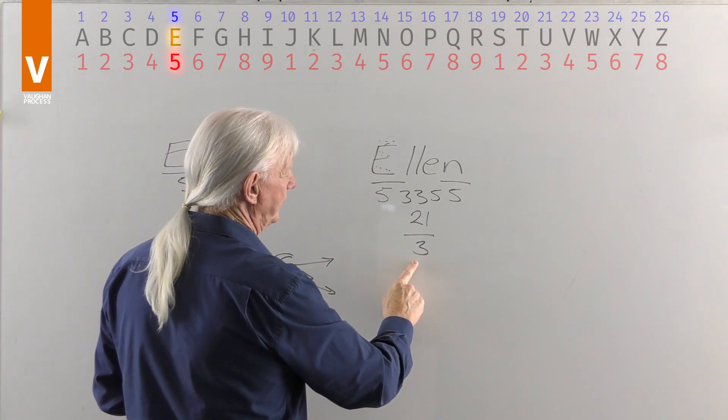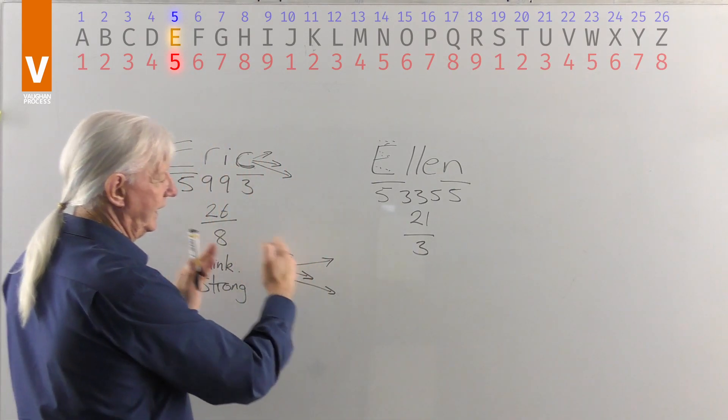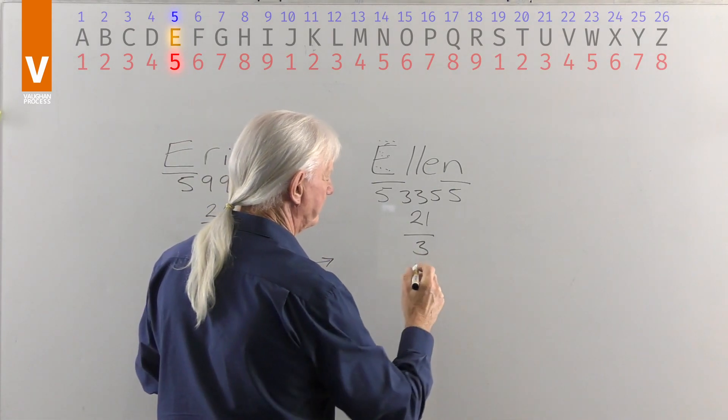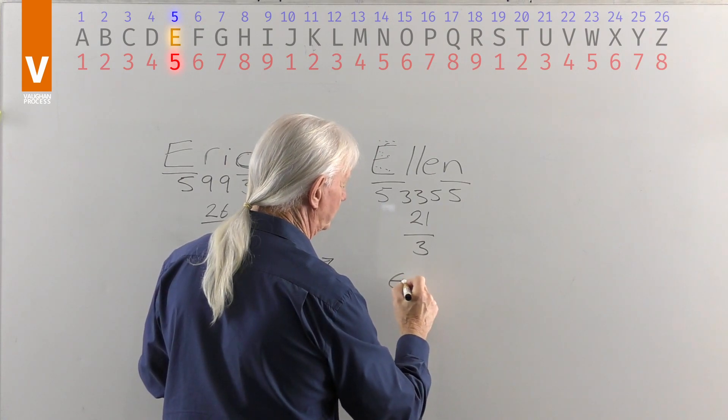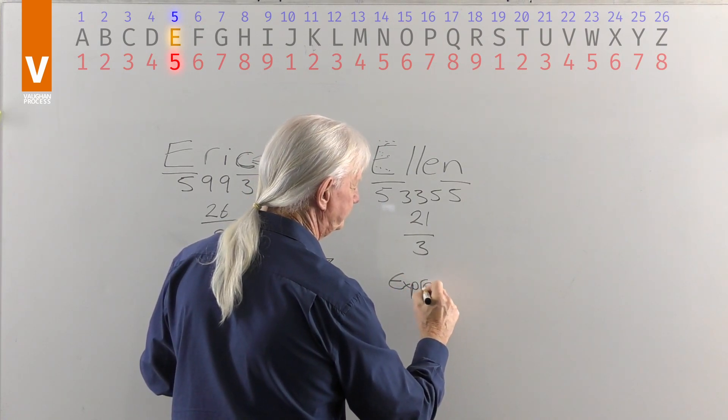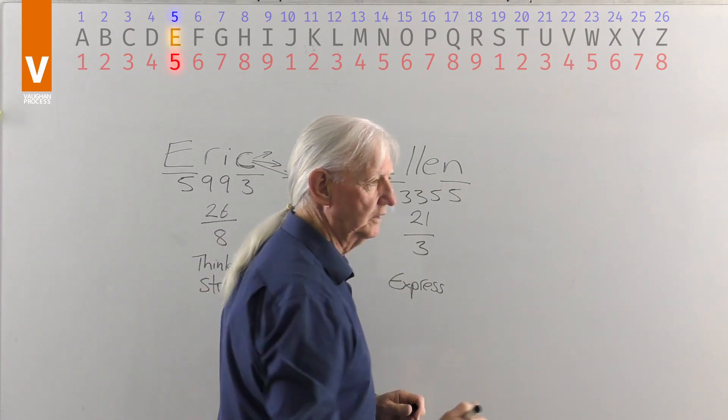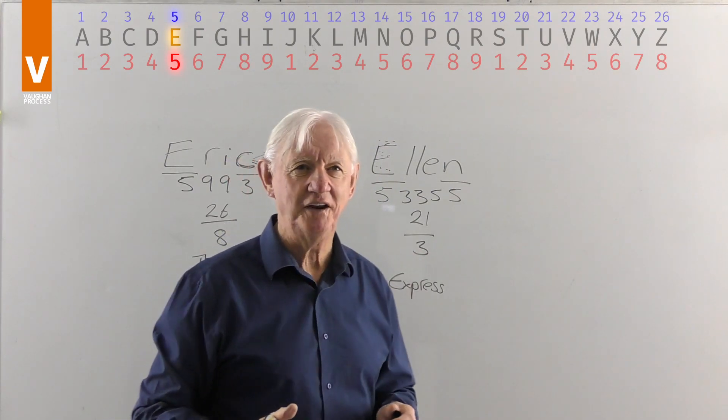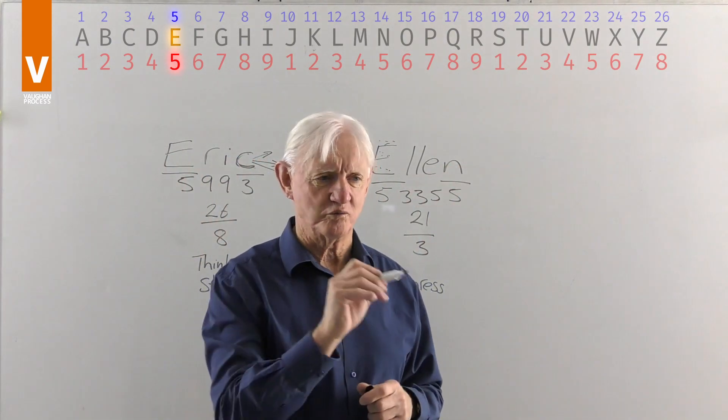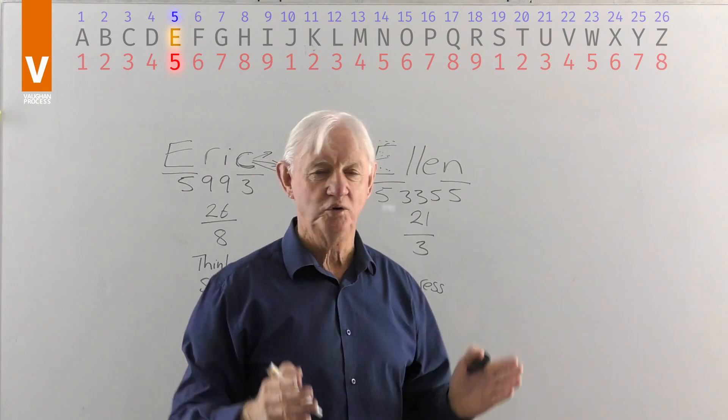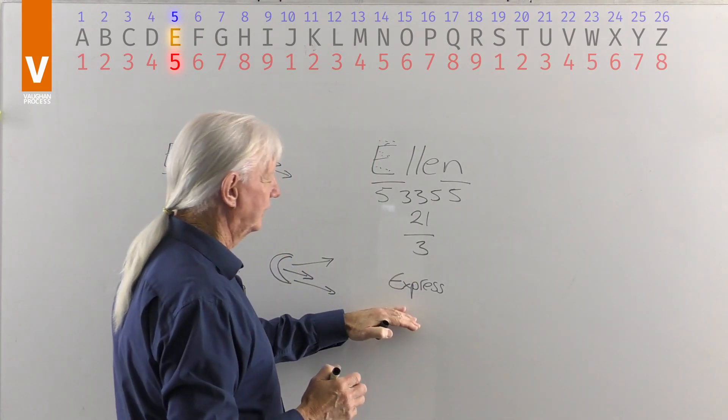So the number 3 then represents not like the 8. It's almost an opposite. Number 3 is to express, talk, laugh, invent, create, paint, draw, write, sport, music. It's just an active name.